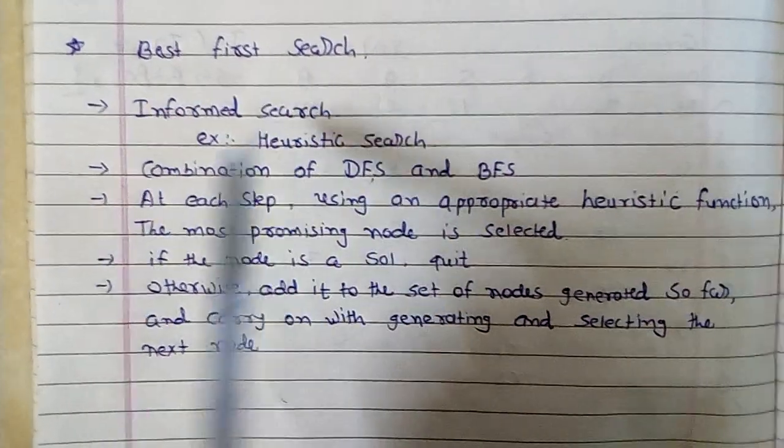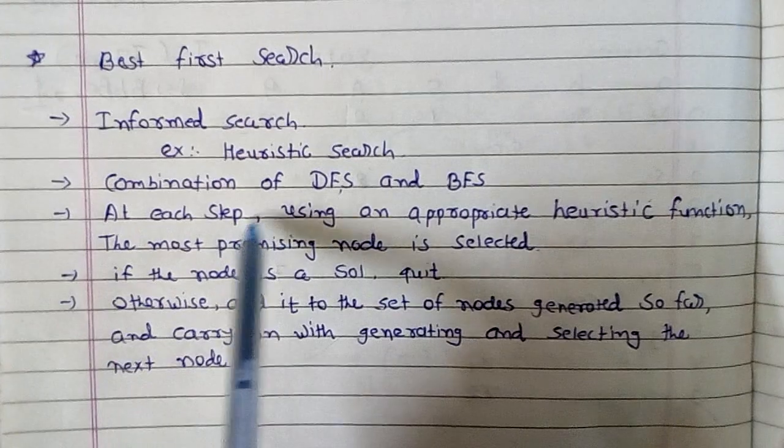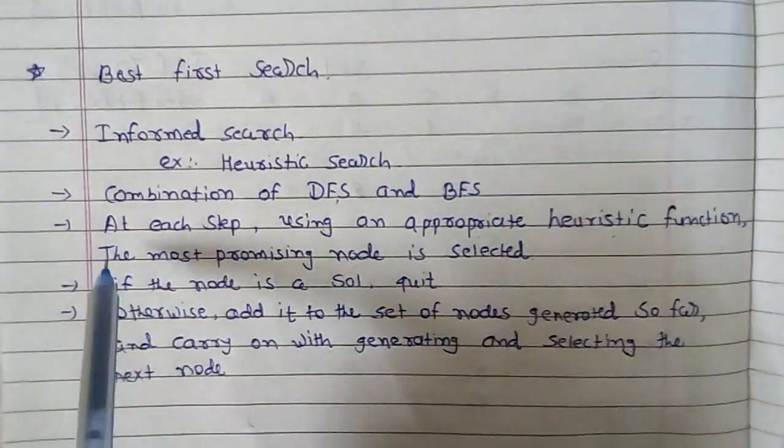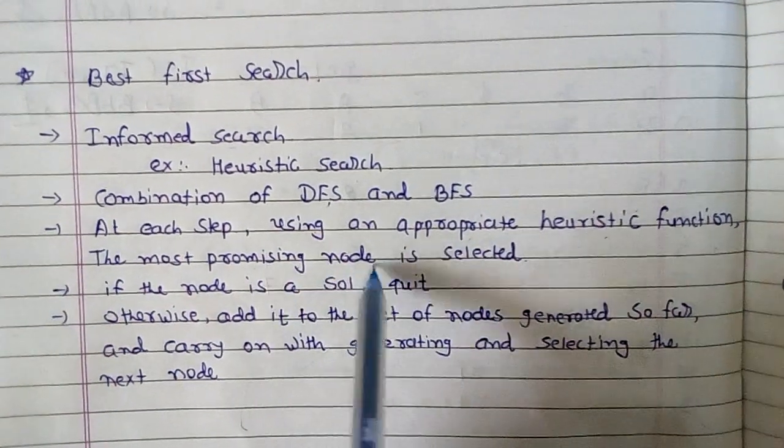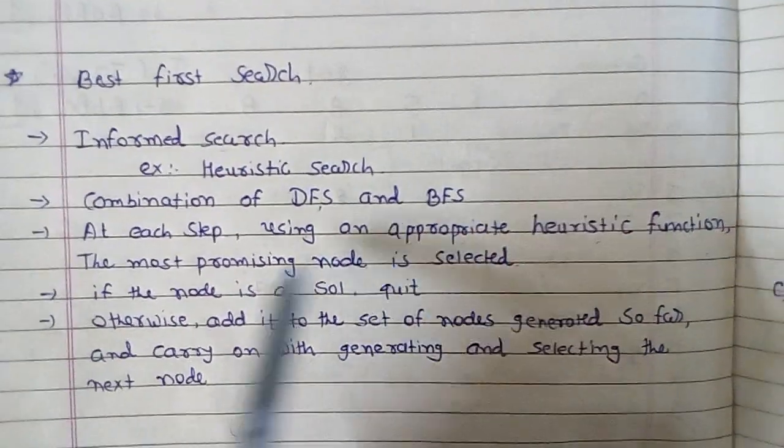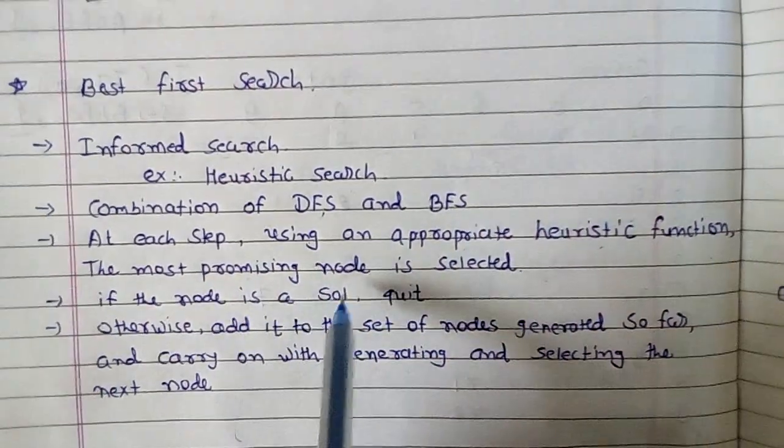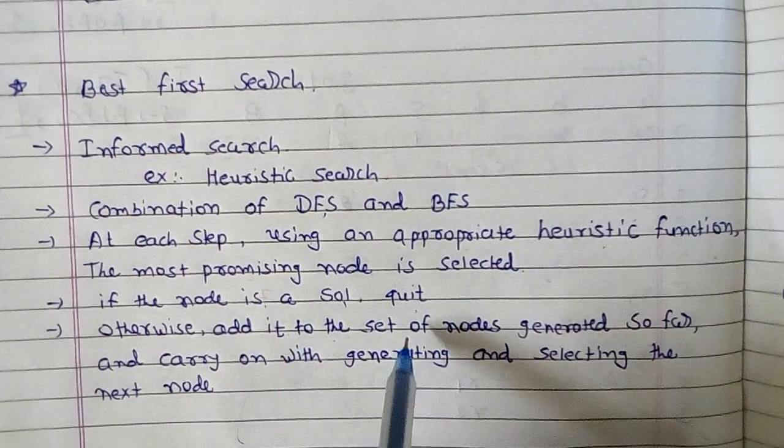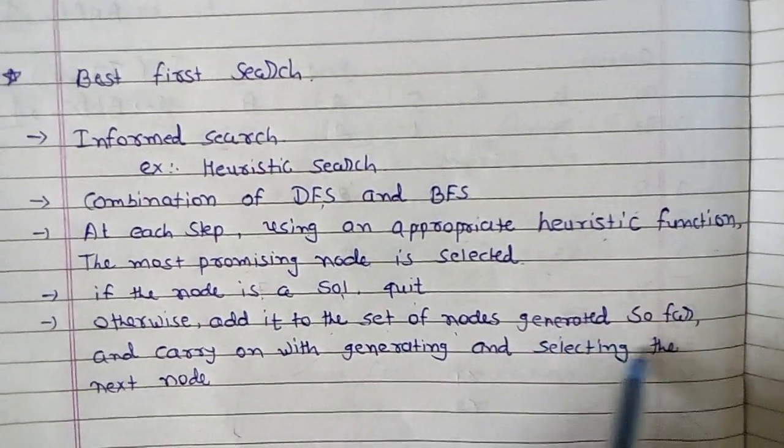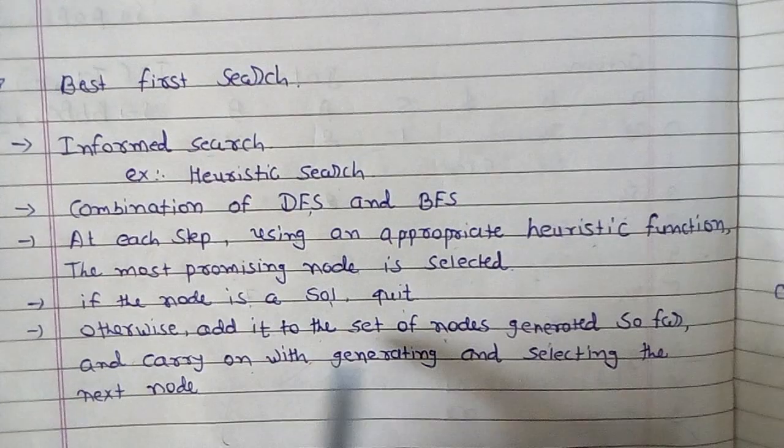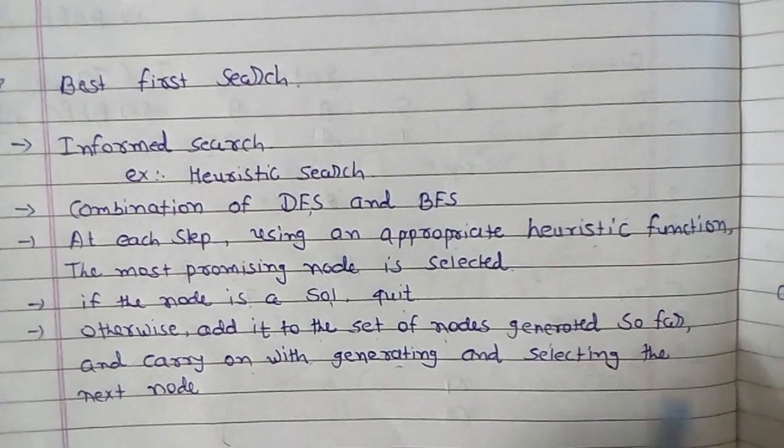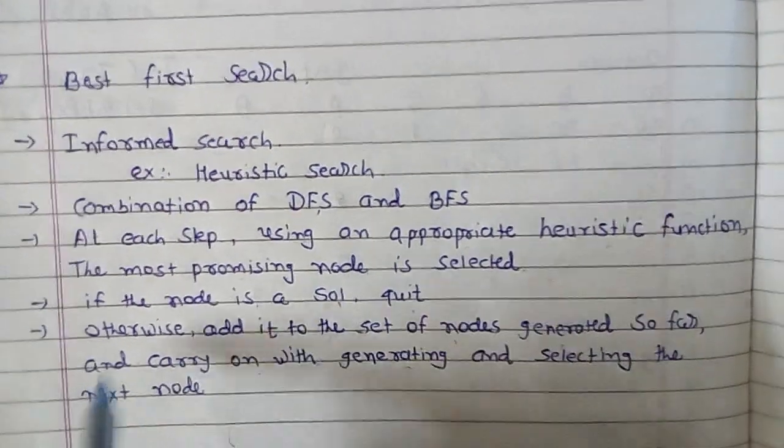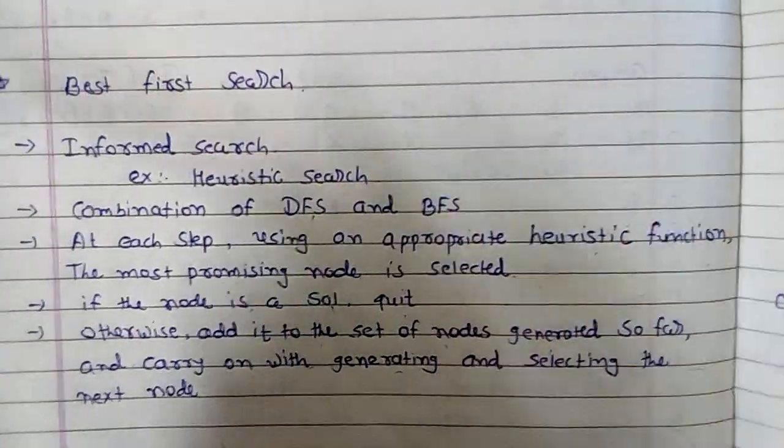Here is the algorithm for best first search. At each step using an appropriate heuristic function, the most promising node is selected. If the node is a solution, then quit. Otherwise, add it to the set of nodes generated so far and carry on with generating and selecting the next node.